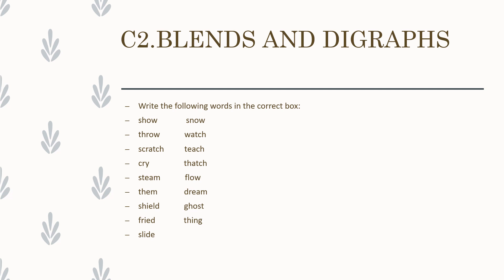Are you ready? Let's go through them: Show — underline SH and decide. Throw — the second one. Scratch — third. Cry — fourth. Steam — fifth. Them — sixth. Shield — seventh. Fright — eighth. Slight — ninth. Now take just one more minute to decide and write whether the letters give one consonant sound or two.